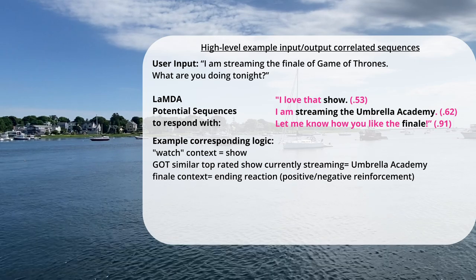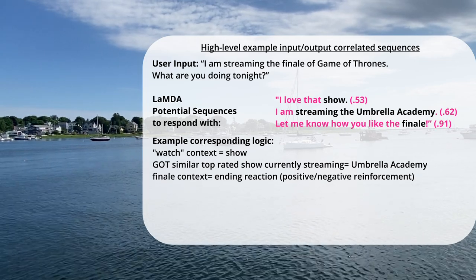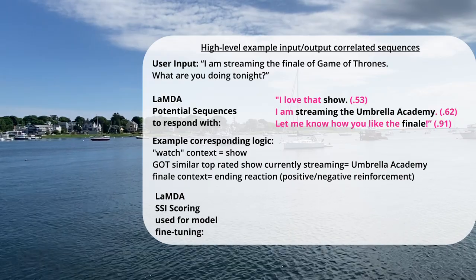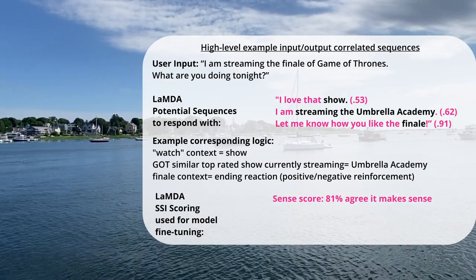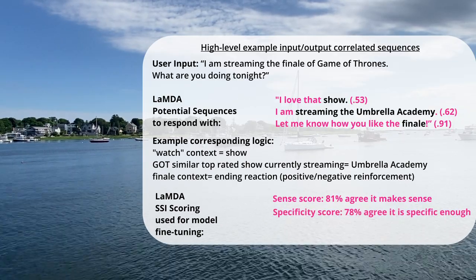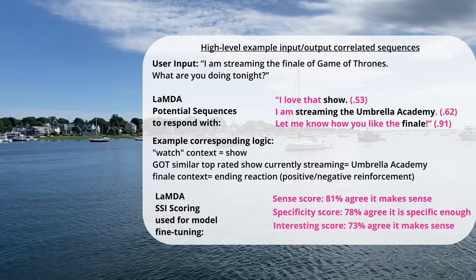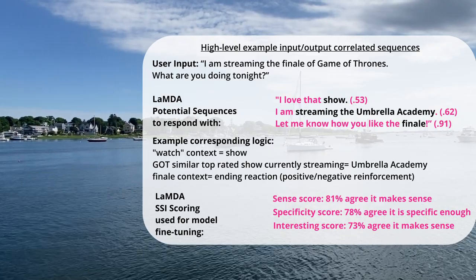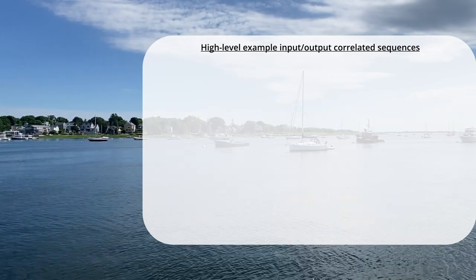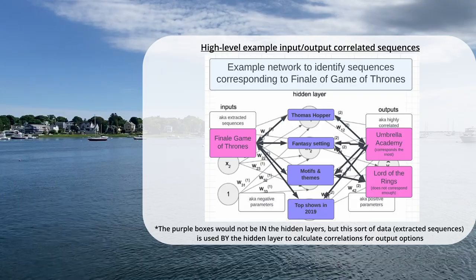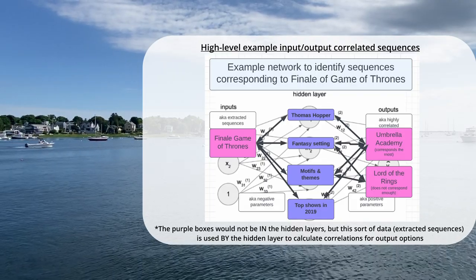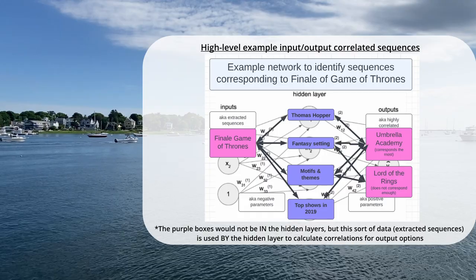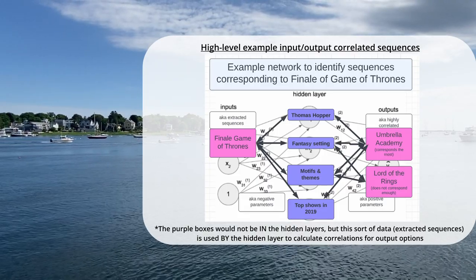These jumps in conversation are supported by how LaMDA tests its model parameters using the SSI metric. Human reviewers assess if the LaMDA dialogue makes sense in context and without contradictions, is it specific in that same context, and is it interesting — measured as a response that is unexpected or witty, basically a way to keep a conversation going. LaMDA can make the jump between Game of Thrones and Umbrella Academy because they are both set in fantasy-like worlds, both share an actor — Thomas Hopper — and both have similar motifs and themes.